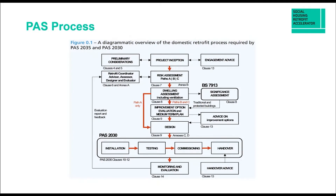The process is well laid out within the PAS2035 document. This flow chart shows the thought process you apply when working to a PAS2035 project. You go through your risk assessment phase, then your dwelling assessment, look at your improvement options, your medium and long-term retrofit plan, evaluate that, and produce a design. At the bottom it covers the installation process, with PAS2030 highlighted in that box. Post-retrofit, it outlines your monitoring and evaluation criteria. It's important to familiarise yourself with this flow chart, because if you don't achieve your intended outcomes, additional monitoring and remedial action will be required.